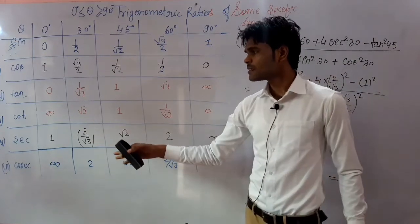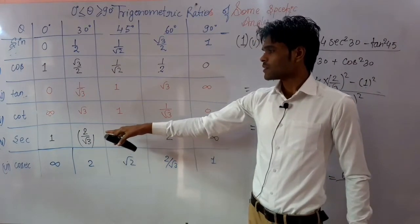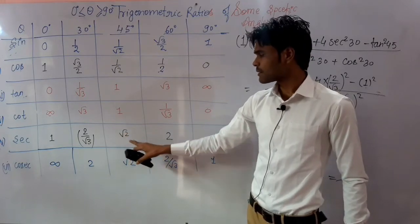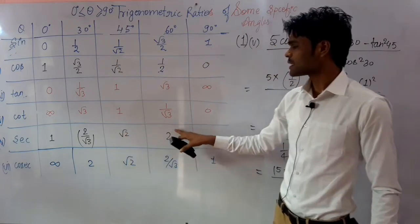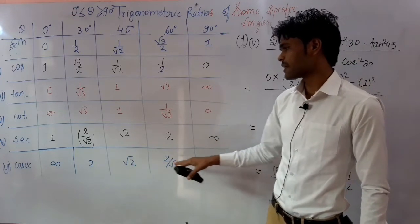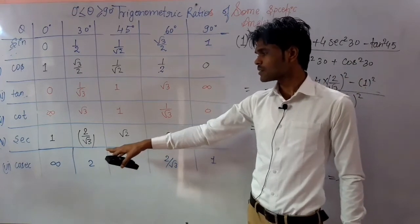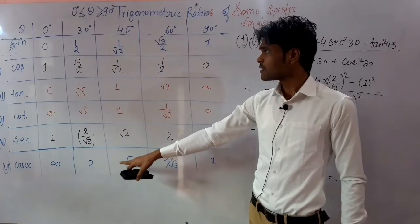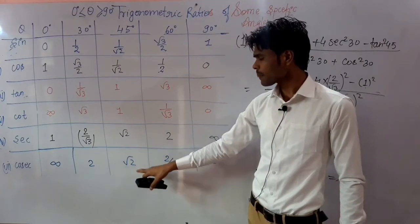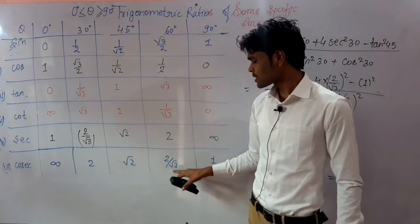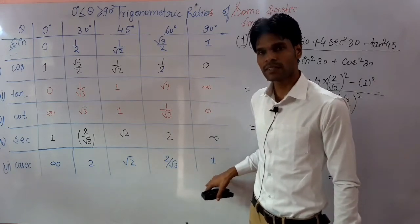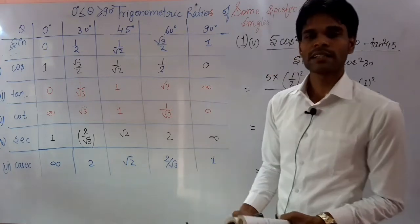Sec 0°=1, sec 30°=2/√3, sec 45°=√2, sec 60°=2, sec 90°=not defined. Cosec 0°=not defined, cosec 30°=2, cosec 45°=√2, cosec 60°=2/√3, cosec 90°=1. So in this way you can learn the values.